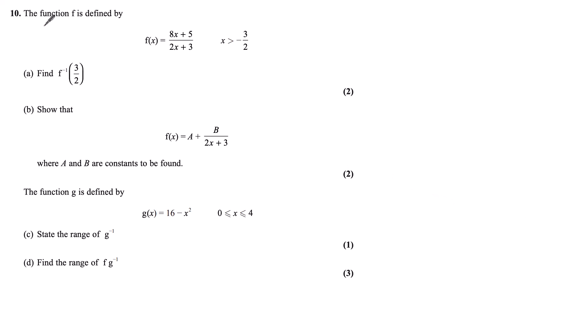Question 10. The function f is defined by f(x) = (8x + 5)/(2x + 3) for x > -3/2. Find f^(-1)(3/2).